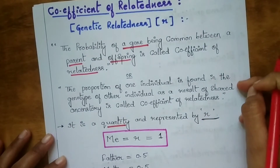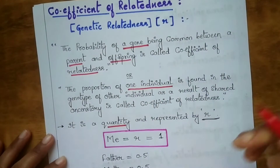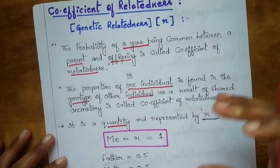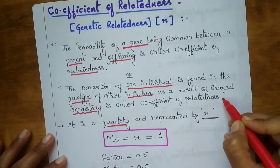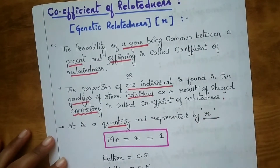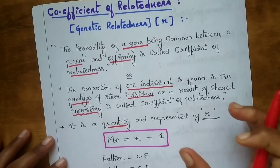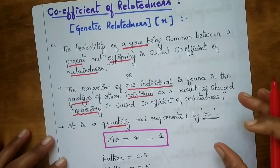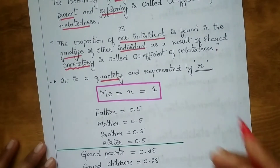One more definition: the proportion of one individual's genes found in the genotype of another individual as a result of shared ancestry is called coefficient of relatedness. Simply, it is the probability of an allele or a gene being common between a parent and an offspring.